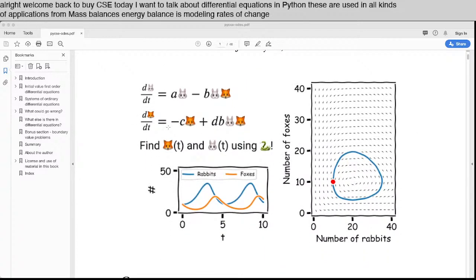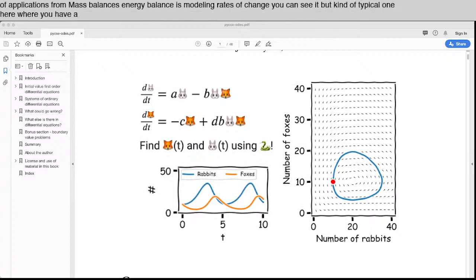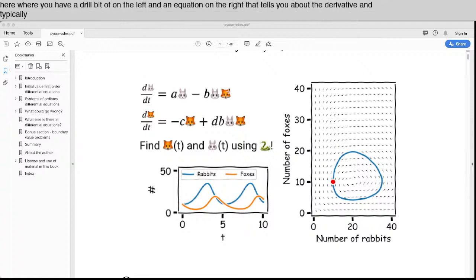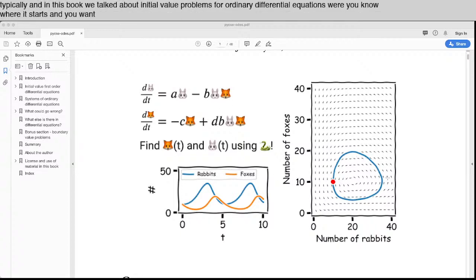You can see a kind of typical one here where you have a derivative on the left and an equation on the right that tells you about the derivative. And typically in this book we talk about initial value problems for ordinary differential equations where you know where it starts and you want to model what's the trajectory.